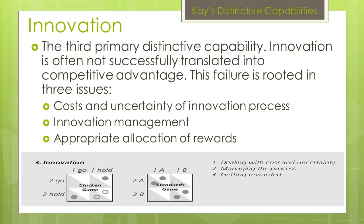Innovation is our last distinctive relational capability. Unlike the other two, innovation is not successfully translated into competitive advantage. This failure is rooted in three issues: costs and uncertainty of the innovation process, innovation management, and appropriate allocation of rewards. The innovation process is costly because it is so risky. There is such uncertainty regarding the product because there is no data or past knowledge of the product to forecast demand or competition. Two variances of the prisoner's dilemma are the chicken game and the standards game. Both display the uncertainty regarding innovation and the costs that go along with it.